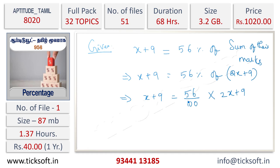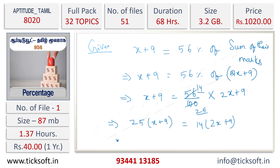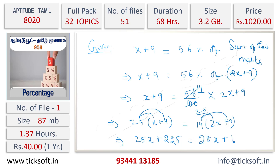We can simplify by canceling the common factor of 4: 14 into 4 is 56, and 25 into 4 is 100. So this gives us 25 into x plus 9 equals 14 into 2x plus 9. Expanding: 25x plus 225 equals 28x plus 126.